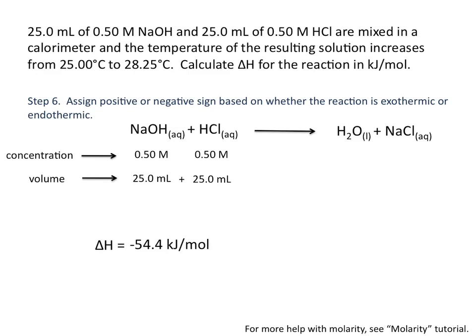You always need to assign a negative or positive sign if you're going to list the value as delta H. If you don't want to list the value as delta H, you could also state that 54.4 kilojoules of heat are released per mole of reaction. And that information would also tell you that the reaction is exothermic.